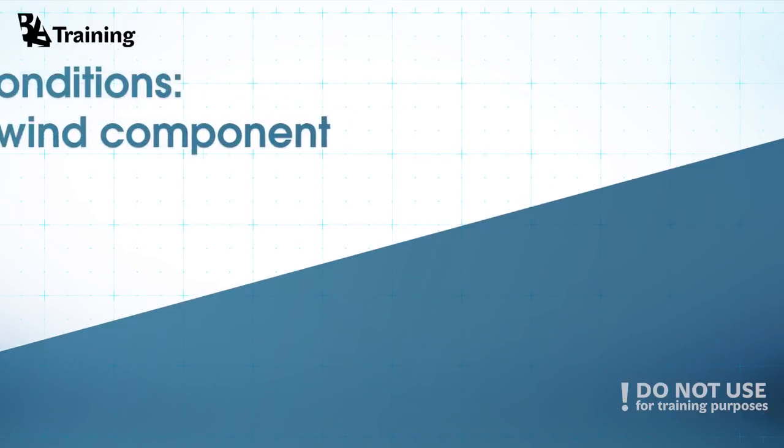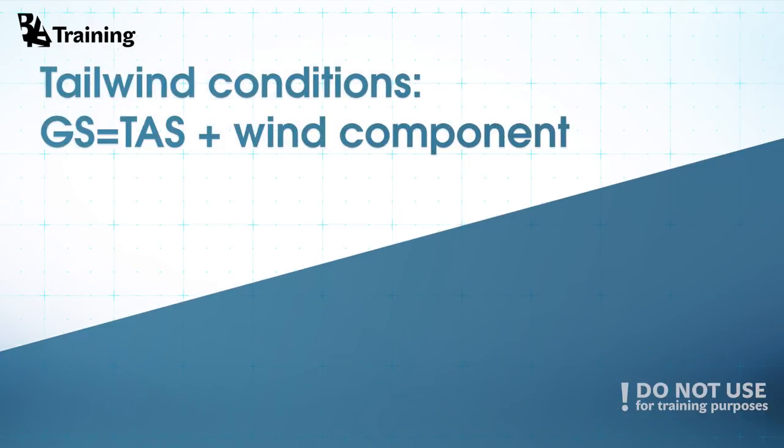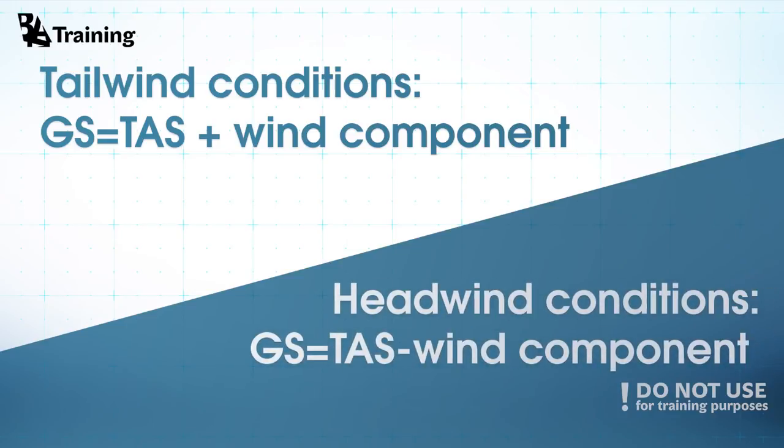So let's summarize: in tailwind conditions, ground speed equals True Airspeed plus wind component. In headwind conditions, ground speed equals True Airspeed minus wind component. Hope this video helped you to understand the difference between ground speed and airspeed.